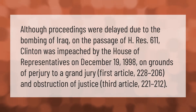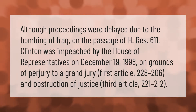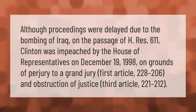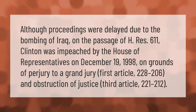Although proceedings were delayed due to the bombing of Iraq, on the passage of H.Res. 611, Clinton was impeached by the House of Representatives on December 19th, 1998, on grounds of perjury to a grand jury (first article, 228 to 206) and obstruction of justice (third article, 221 to 212).